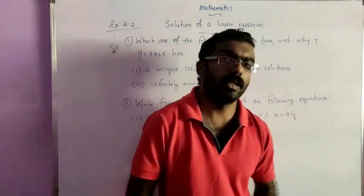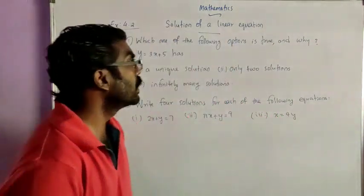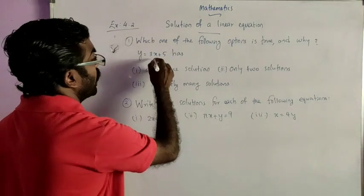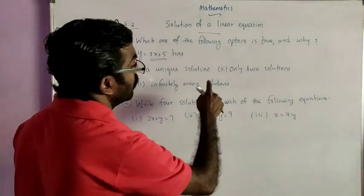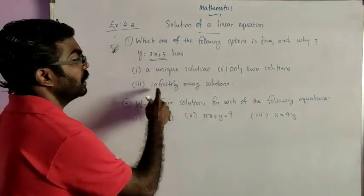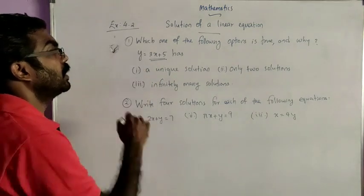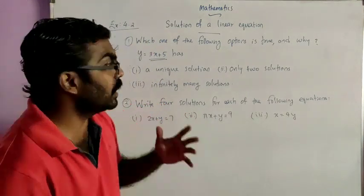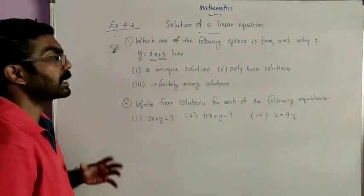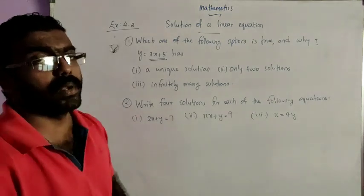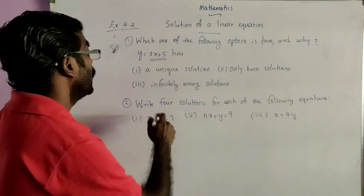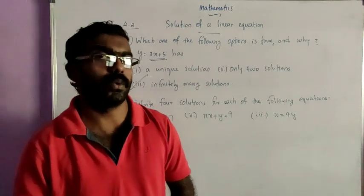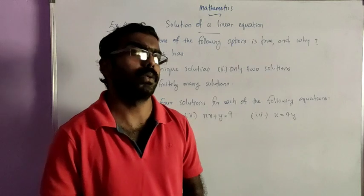Now we shall discuss Exercise 4.2 of NCERT Class 9 Maths. The first question is: which one of the following options is true and why for y is equal to 3x plus 5? Option 1: a unique solution. Option 2: only two solutions. Option 3: infinitely many solutions. Since y equals 3x plus 5 is clearly a linear equation in two variables x and y, and we know a linear equation in two variables has infinitely many solutions, option 3 is the right answer.